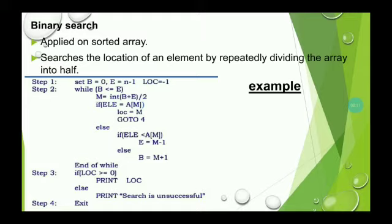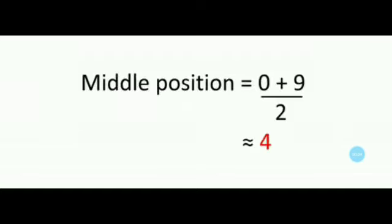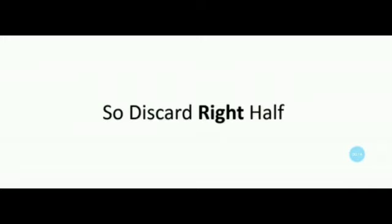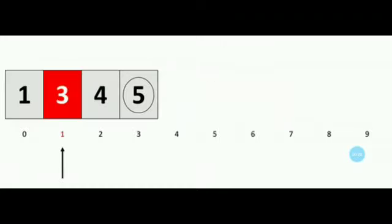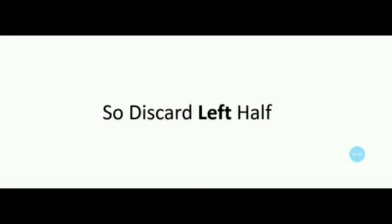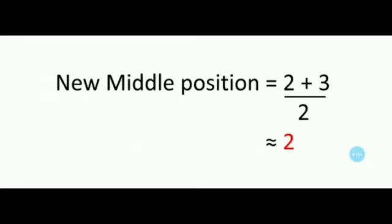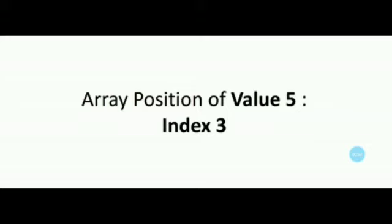Let us see one example. Suppose the element to be searched is 5. The middle element is calculated first, which is at position 4. Since 5 is less than 7, the right half of the array is discarded. Now beginning is 0, end is 3, and the middle element is at position 1. Since 5 is greater than 3, the left half is discarded. Now beginning is 2, end is 3, and the middle element is at position 2. Since 5 is greater than 4, again the left half is discarded. Now beginning is 3, end is 3, middle is also at position 3. We found element 5 at position 3.